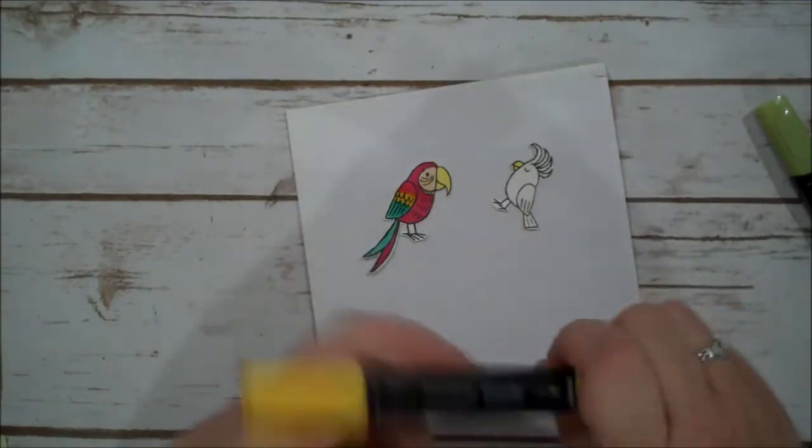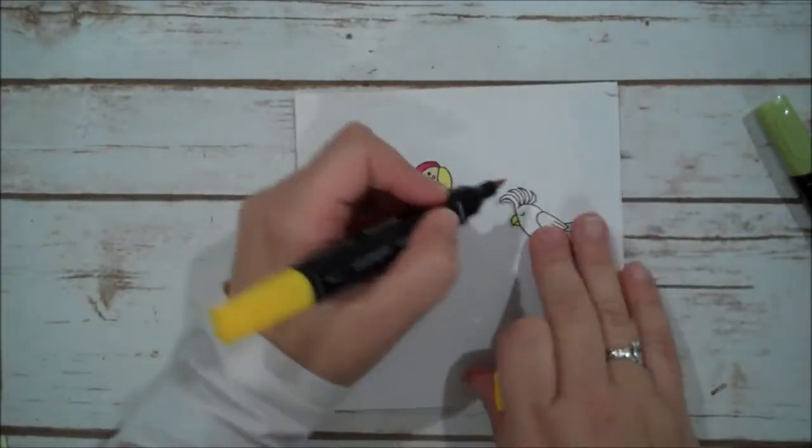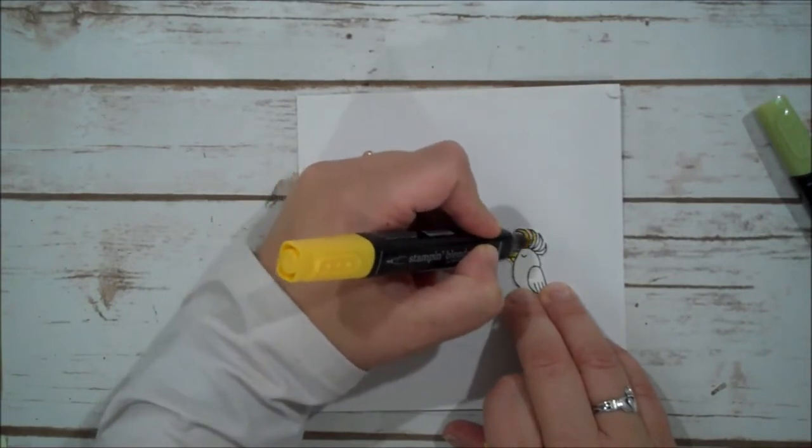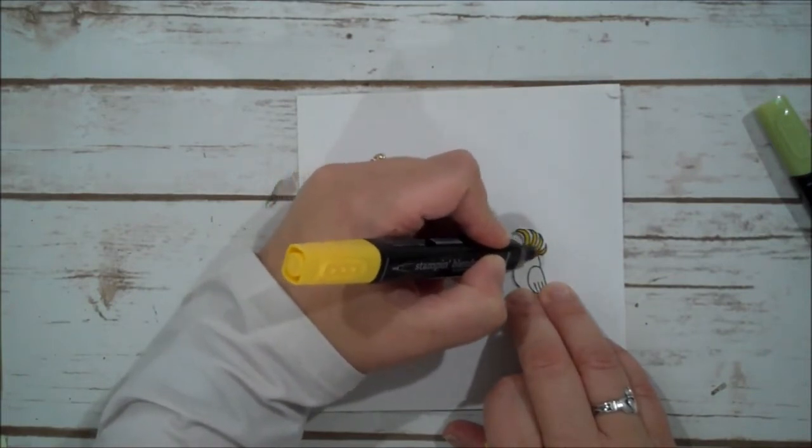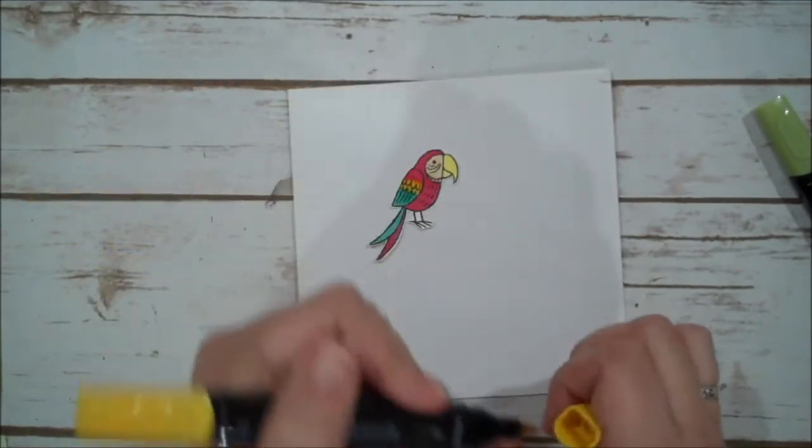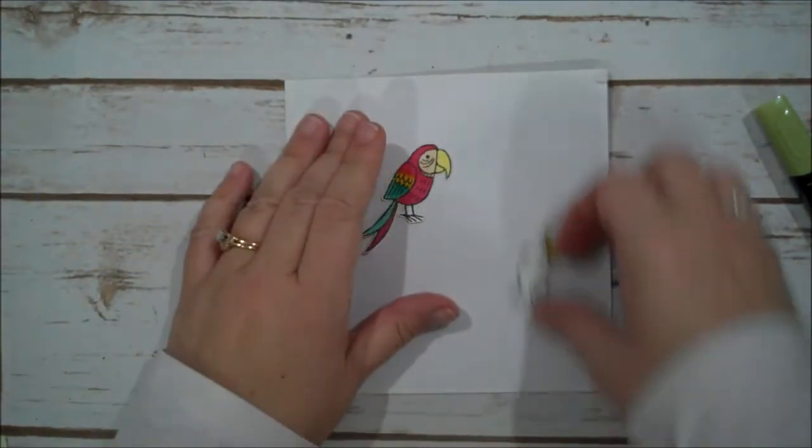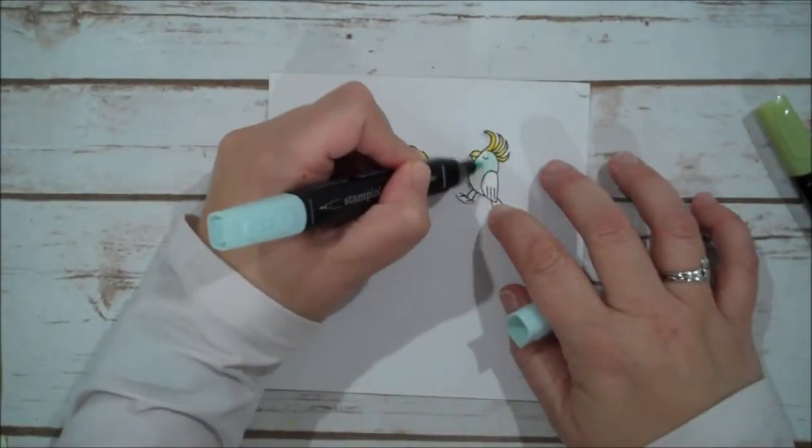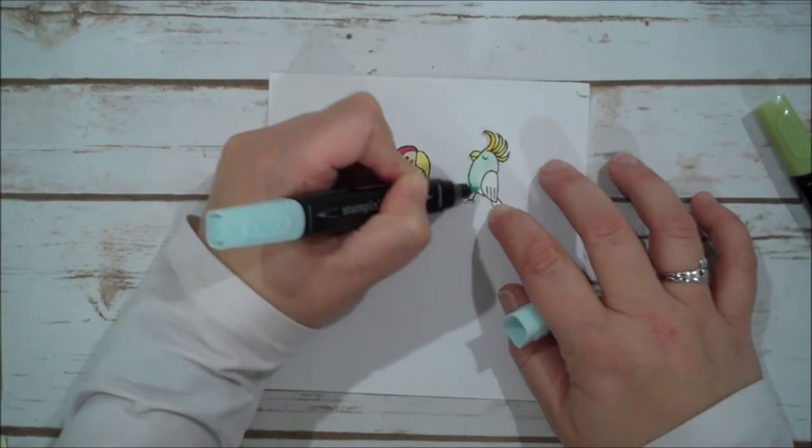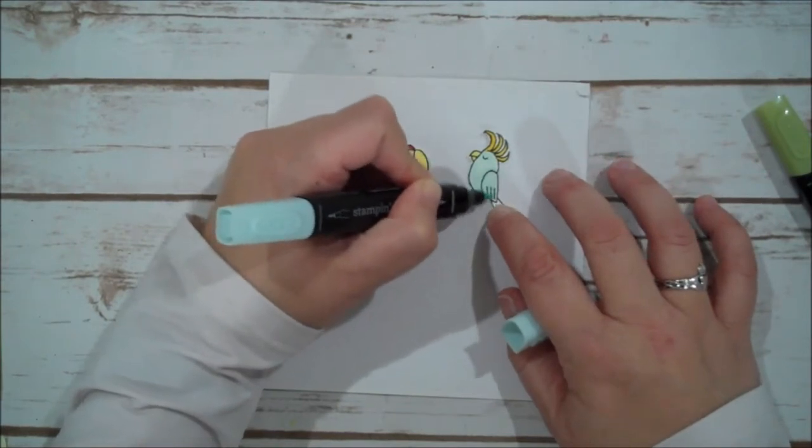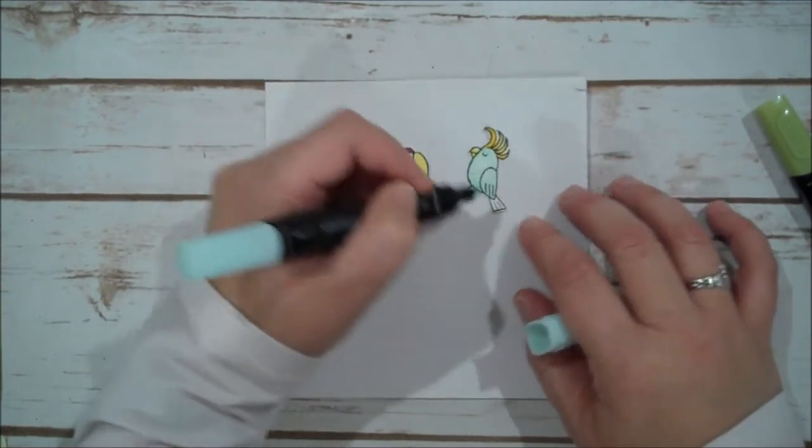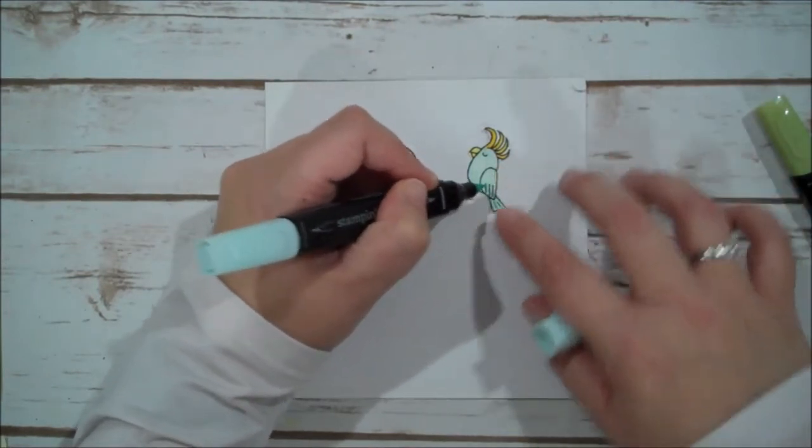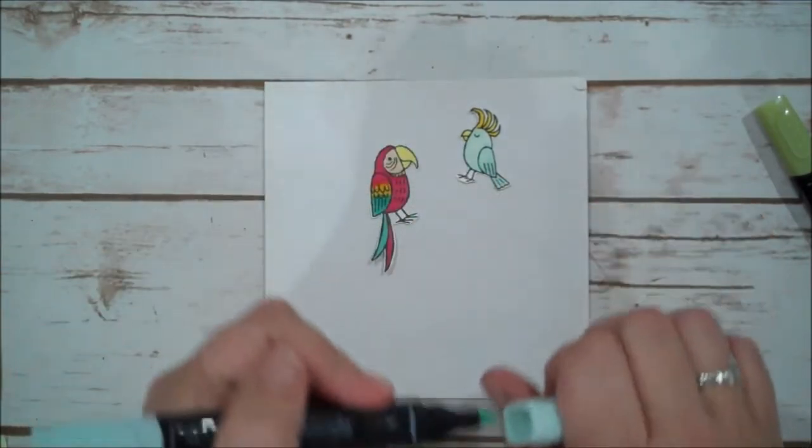I'm going to pull back in that Darker Daffodil Delight. And I'm going to do his hair here. Little feathers. And then we're going to use the Pool Party to color in his body. Just to give him a little soft color.